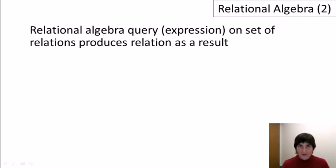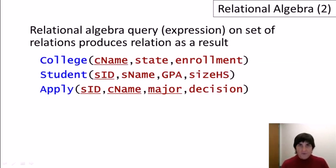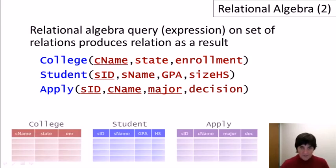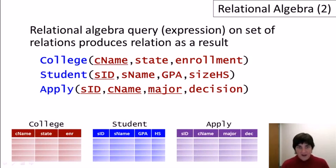As a reminder, we apply a relational algebra query or expression to a set of relations and we get as a result of that expression a relation as our answer. For our examples, we're using an imaginary database about college admissions. We have a relation of colleges, a relation of students, and a relation with information about students applying to colleges. We'll keep at the bottom of the video these three depictions of those relations with a few abbreviations used so that names aren't too long.